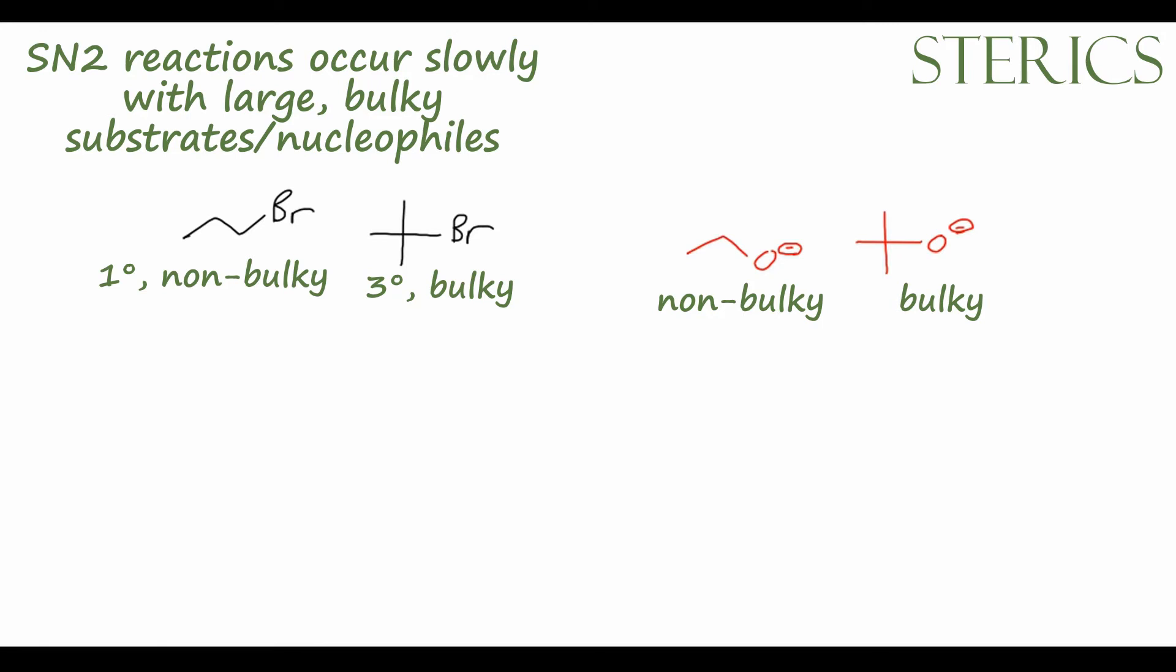So why is that the case? Well, to look at that, let's draw some pictures of the transition states of these substitution reactions. We can imagine an SN2 reaction where we have propyl chloride as our electrophile and it's being attacked by maybe NaOH. So OH- is our nucleophile. Let's draw the transition state for that.